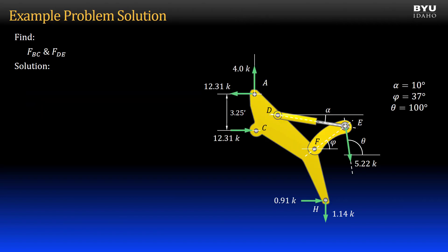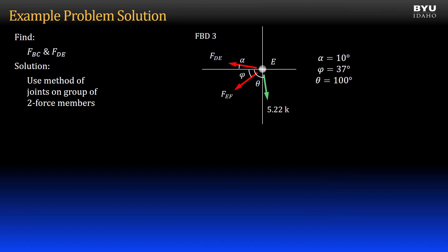Now that I know the force in member EG, I can use the method of joints to get the force in RAM DE. Free body diagram 3 represents the joint at E. I will get the two unknown forces by summing forces in the X and Y directions.